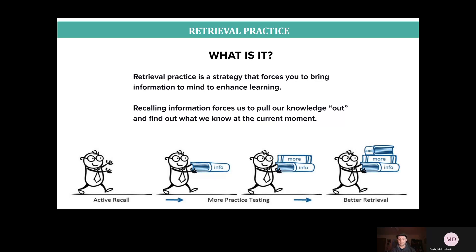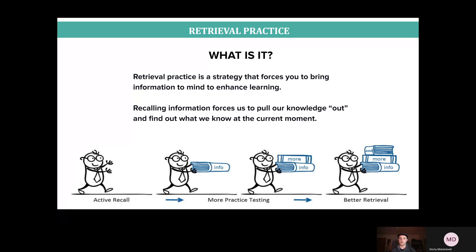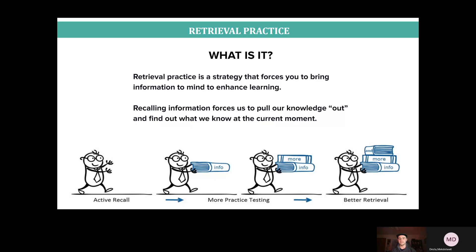Recalling information — especially information that doesn't immediately come to us — forces our brain to flex and practice retrieving that information. The more we do that, the closer that information is to the front of our long-term memory, and the easier it'll be to retrieve in difficult situations.